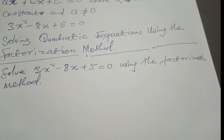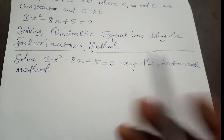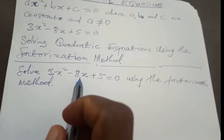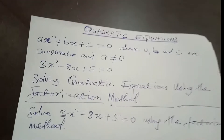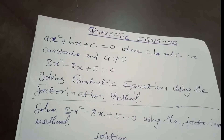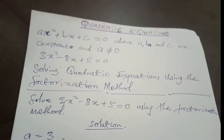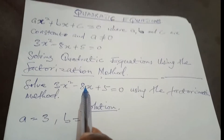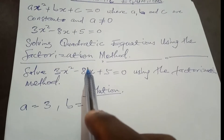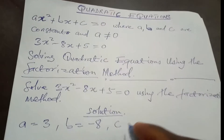To solve 3x² - 8x + 5 = 0 using the factorization method: Step one — it is already in standard form, so step one is done. For step two, we factorize. Comparing with the general equation, our a is the coefficient of x², which is 3. Our b is the coefficient of x — remember we write the number with its sign — so b is negative 8. And our c is the constant, which is 5.